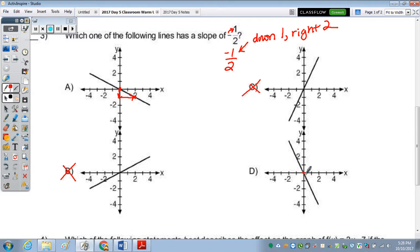Where this one, look at that point and that point, is down 2 over 1. So down 1 over 2, A is the correct answer.